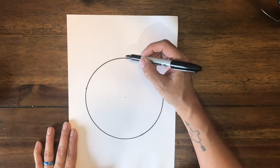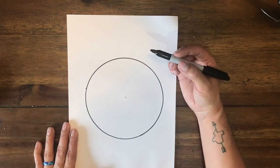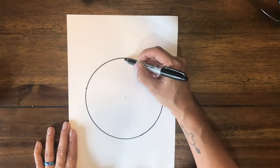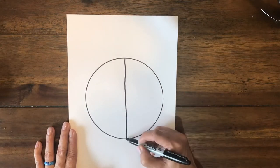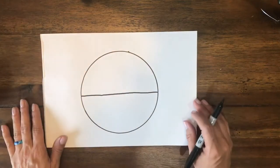It doesn't have to be perfect but try to get it close to the center. Some of you like to use rulers to make straight lines which is fine, but you do not have to. We're just gonna make our color wheel by drawing a line from the top to the bottom right through that middle dot.